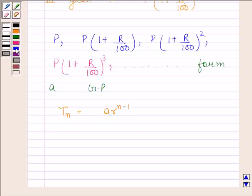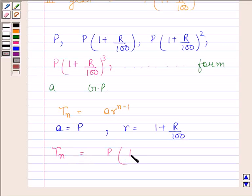We know that the general term of a GP is given by A into R to the power N minus 1. Now here, the first term (that is A) is equal to P, and common ratio (that is R) is equal to 1 plus R by 100. So, Nth term is equal to P into 1 plus R by 100 to the power N minus 1.